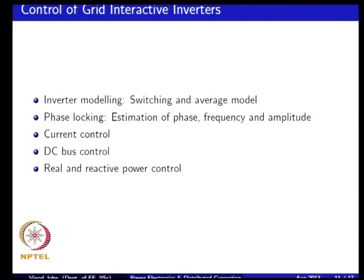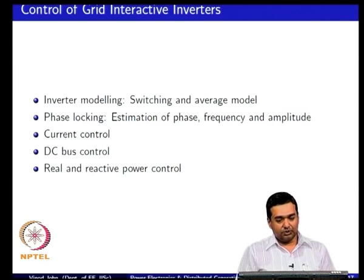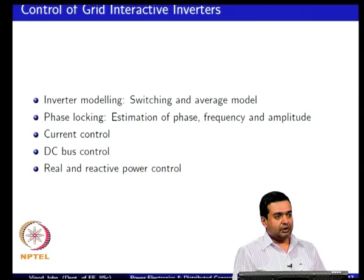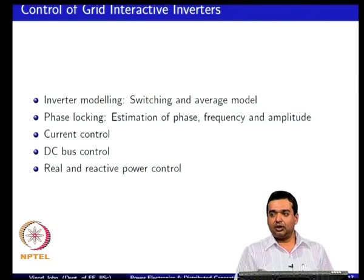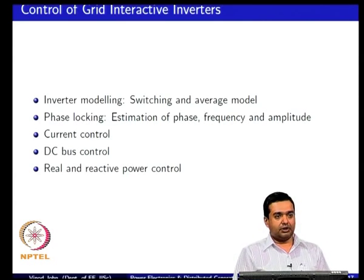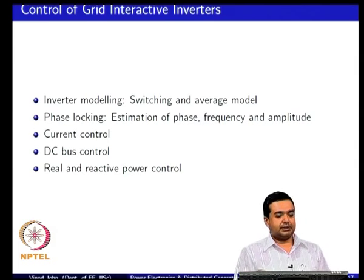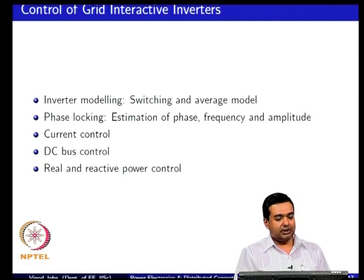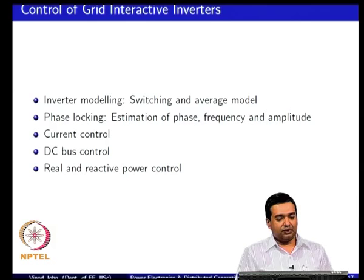If you look at control related aspects, to some extent we will look at the switching and average models. Some of the important requirements are to be able to do phase locking, how to control the current coming out of your distributed generation unit, how to control the DC bus, and how to control the real and reactive power coming out of your power conditioning unit. These are control related issues which we will try to address to some extent.